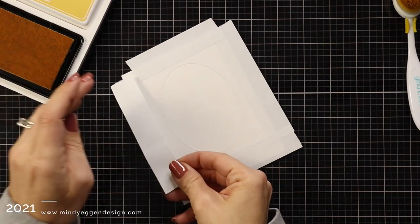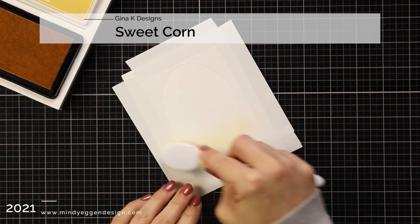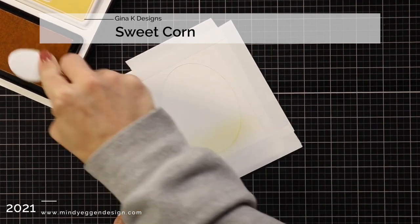Then I'm taking some thin post-it tape and I am putting that around all of my edges so I don't get any of my ink on the very edges of my card front.